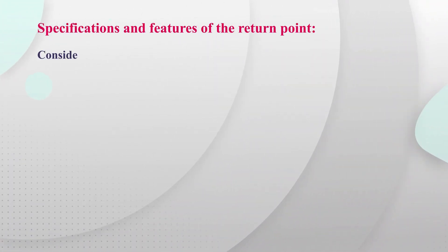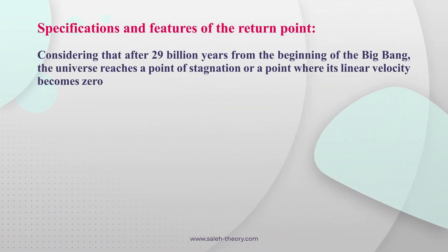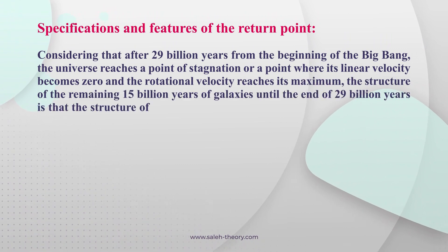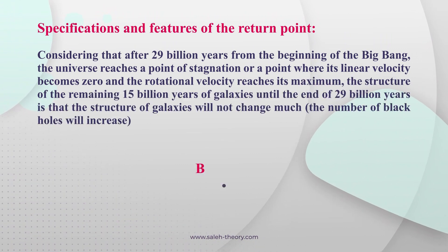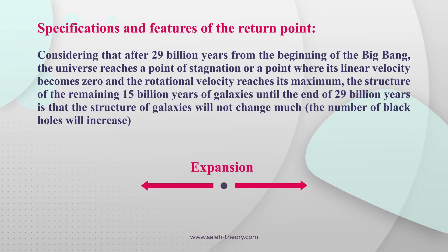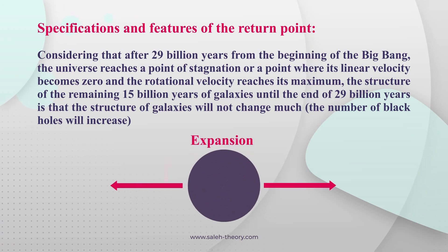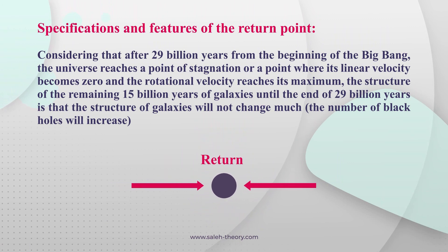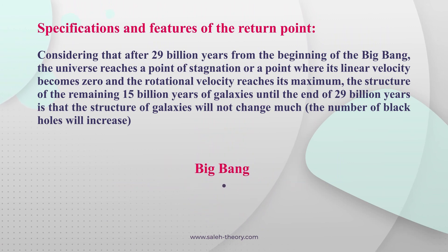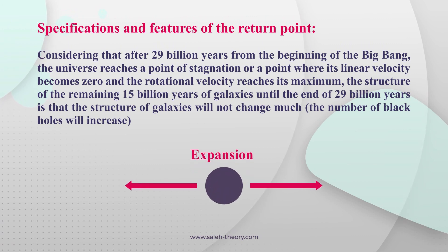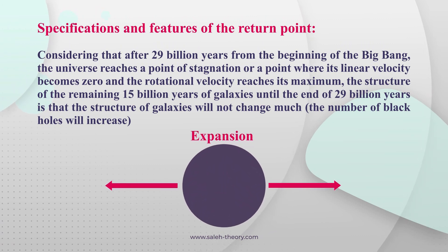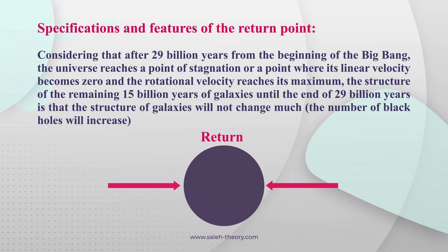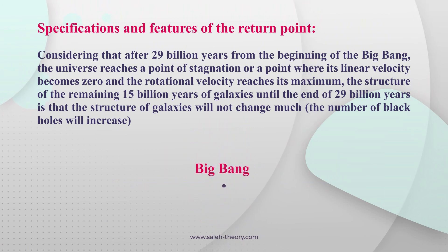Specification and features of the return point: considering that after 29 billion years from the beginning of the Big Bang, the universe reaches a point of stagnation — a point where its linear velocity becomes zero and the rotational velocity reaches the maximum. The structure of galaxies during the remaining 15 billion years until the end of 29 billion years will not change much, and the number of black holes will increase.